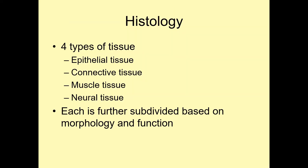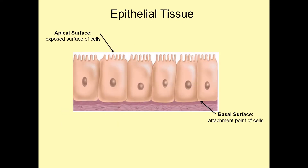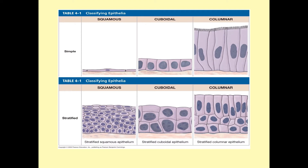Then we have some histology. We have four types of tissue: epithelial, connective, muscle, and neural tissue. We will refer to epithelial tissue in two regions — the apical surface, or the exposed surface, and the basal surface, or the attachment point. Epithelial tissue is divided into squamous, cuboidal, and columnar, referring to the shape of the cell. Squamous is flattened, cuboidal is cubic, and columnar is elongated cells. Simple versus stratified refers to the layering of the cells — simple cells are single-layered and stratified cells are multi-layered.